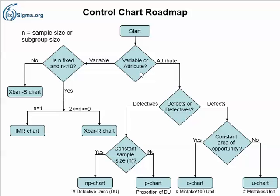Recall from a previous lecture that attribute data is data where the measurement can't be meaningfully subdivided — so, on/off, true/false, yes/no, black/white, and along those lines. Variable data or variable measurement systems is where you can meaningfully subdivide the data: length, time, weight, distance, hardness, temperature, and that sort of thing.